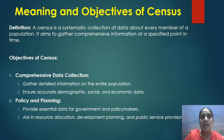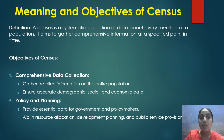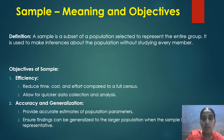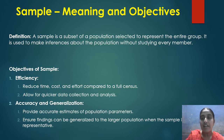A census is a systematic collection of data about every member of a population, aiming to gather comprehensive information at a specified point in time. Objectives include comprehensive data collection to ensure accurate demographic, social, and economic data, and policy and planning to provide essential data for government and policymakers, aiding in resource allocation, development, and public service provision. A sample is a subset of a population selected to represent the entire group, used to make inferences about the population without studying every member. The objective of sampling efficiency is that it reduces time, cost, and effort compared to a full census, and allows for quicker data collection and analysis.